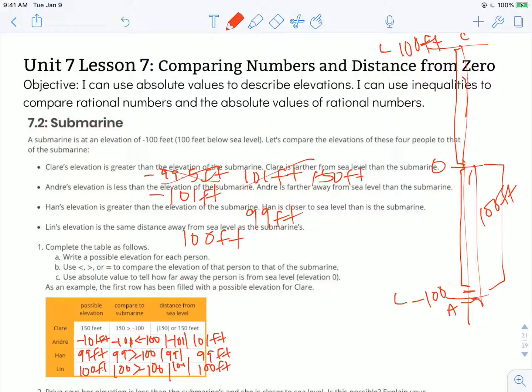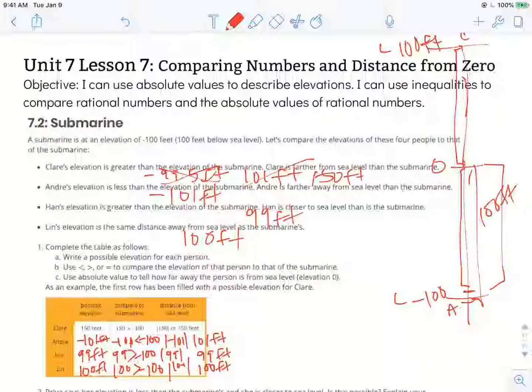And that's how we would summarize all this information using inequalities. Again, our objective says I can use absolute values to describe elevations, and I can use inequalities to compare rational numbers and the absolute values of rational numbers. Thanks for watching, and I'll see you next time.